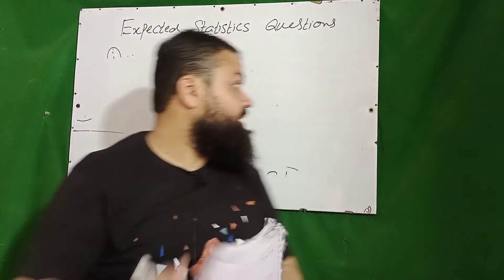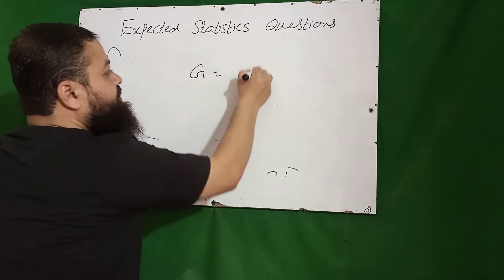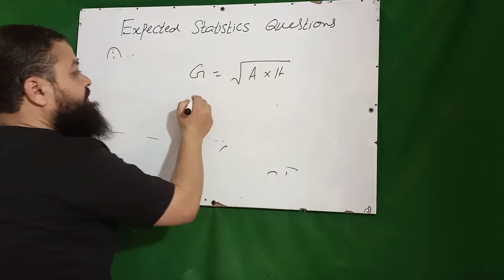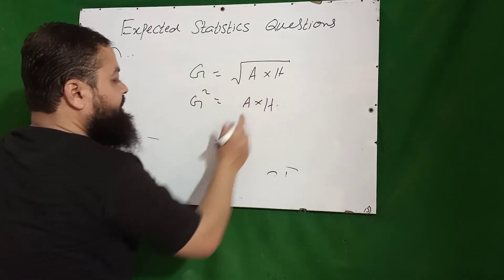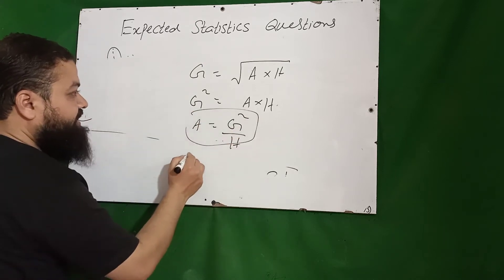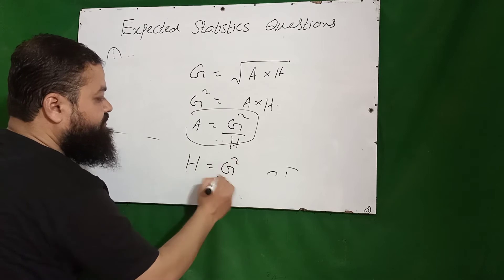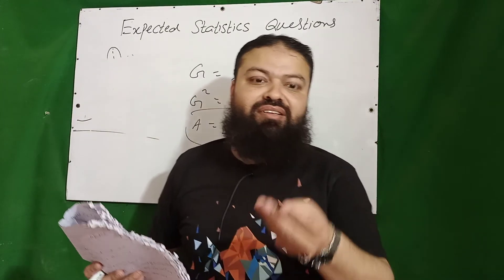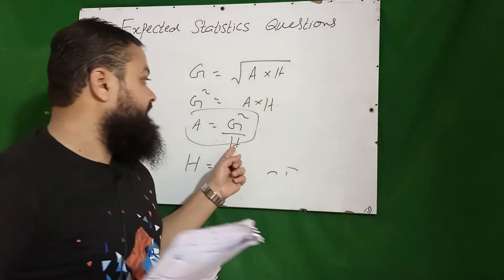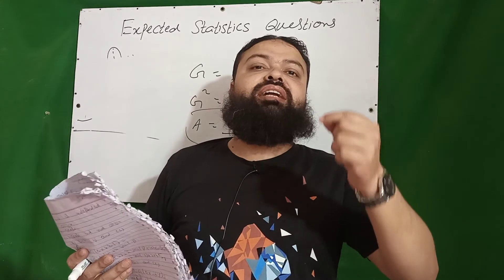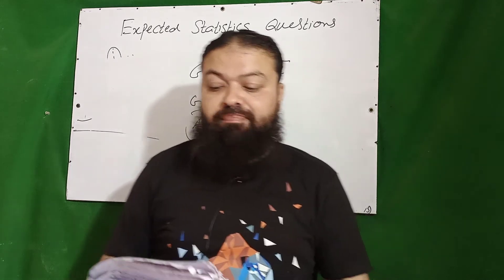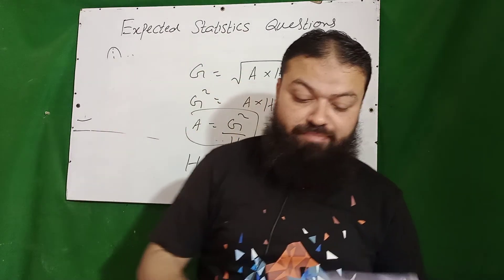The next very important question: we know geometric mean G equals the square root of (arithmetic mean A multiplied by harmonic mean H). Squaring both sides gives G² = A × H. From this we can write A = G²/H, and H = G²/A. Simple average is also called unweighted mean — a very important one.